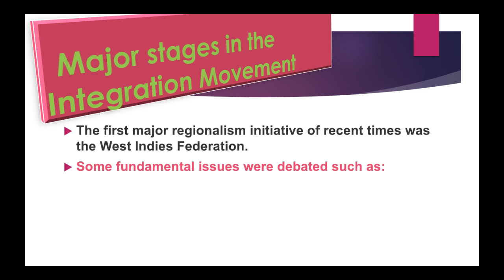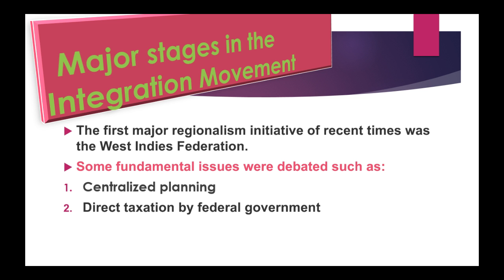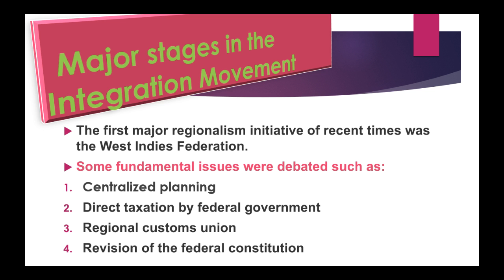Some fundamental issues were debated within the federation. First, centralized planning — a planned economy system where inputs are based on direct allocation. Second, direct taxation by the federal government — a government levy on an individual's income, property, or wealth. Third, a regional customs union — an agreement by two or more countries to remove trade barriers and eliminate or reduce customs duties on mutual trade. Fourth, revision of the federal constitution.